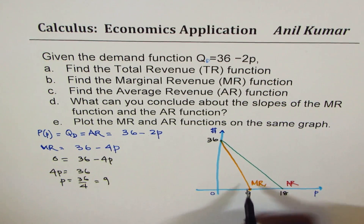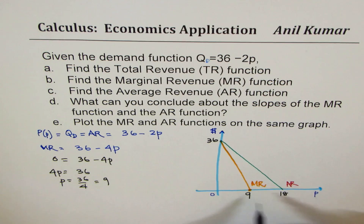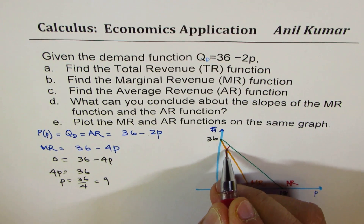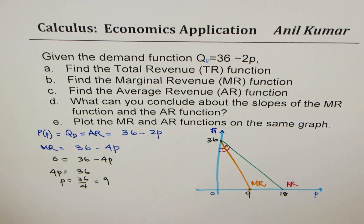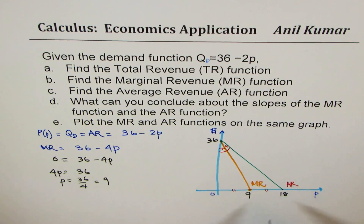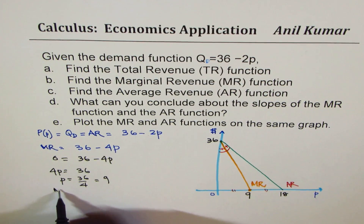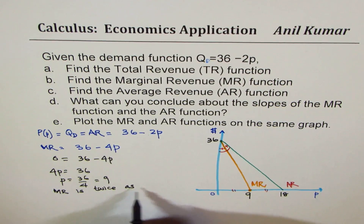The graph of marginal revenue is twice as steep as average revenue. You'll notice the MR line bisects the angle between the AR line and the axes — the x-intercept of MR is always the midpoint of the x-intercept of AR. This confirms that marginal revenue is twice as steep as average revenue.